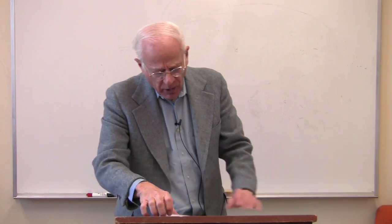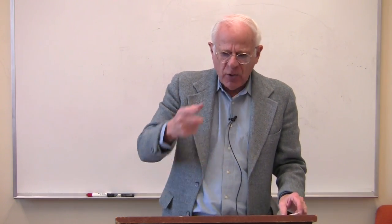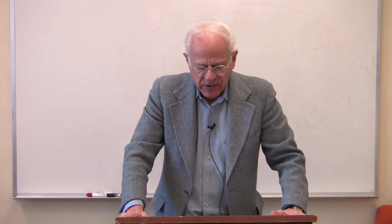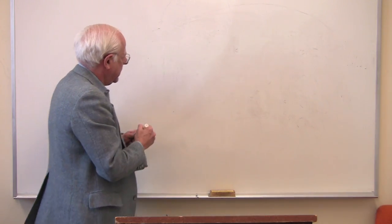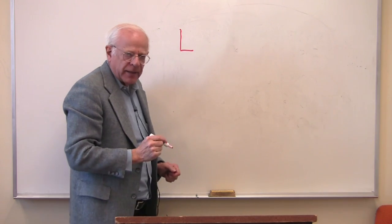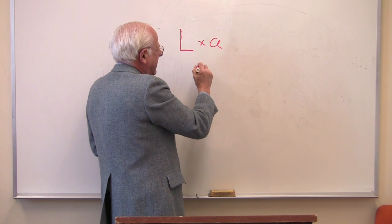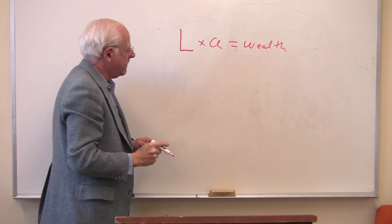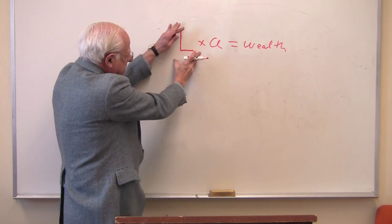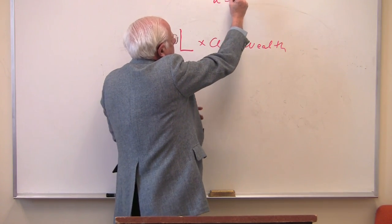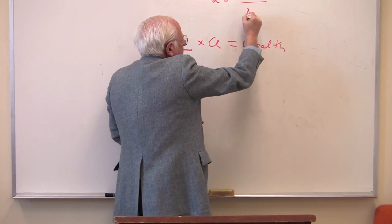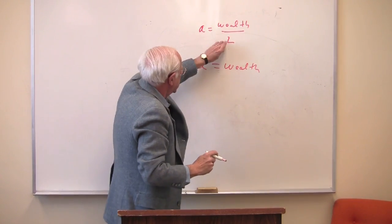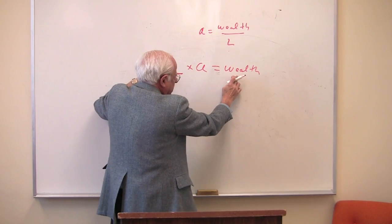One of them is the labor process times a certain productivity, which gives us wealth. Let me write that quickly on the blackboard — in pretty red. The labor process times the productivity of that labor gives us wealth. We have a labor process and its productivity. Wealth, in the numerator, is what the labor in the denominator yields. A times L gives us the wealth in society.